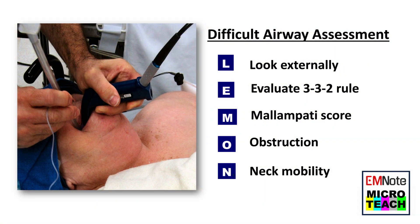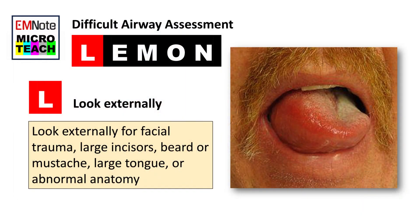The LEMON mnemonic facilitates airway assessment for predicting difficult intubation. L stands for Look Externally — this involves visually inspecting the patient's airway for any signs of difficulty, such as facial trauma, large incisors, beard or mustache, large tongue, or abnormal anatomy.